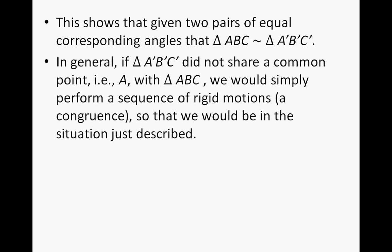In general, if A'B'C' did not share a common point, i.e., point A, with triangle ABC, we would simply perform a sequence of rigid motions, a congruence, so that we would be in the situation we just described. The key is that you have to have a shared point because that becomes your point of your center of dilation in order to get the parallel lines, which now gives us our corresponding angles, so on and so forth.